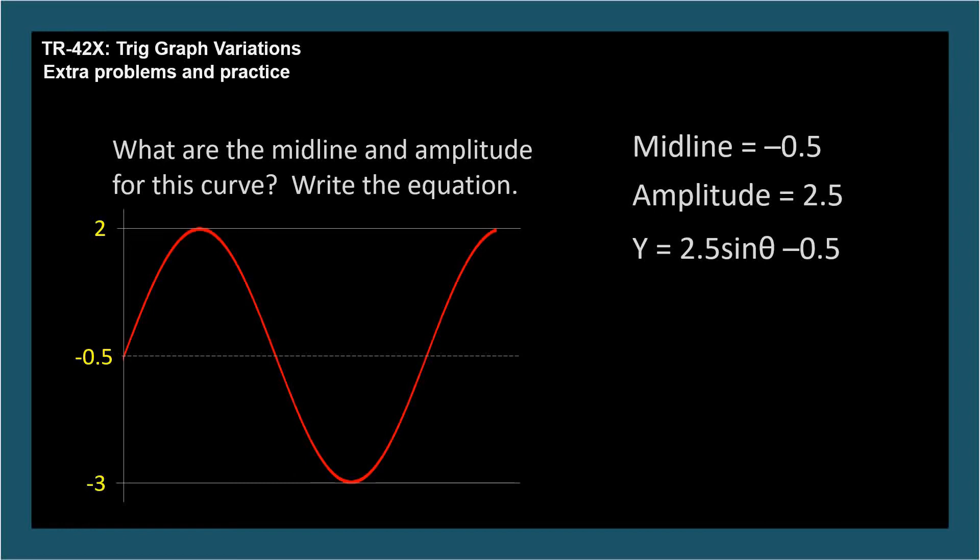Let's change up the vertical axis again. What is the midline, amplitude, and equation of this sine wave that oscillates between 99.5 and 100.5? The midline is 100, and the amplitude is 0.5. So, 0.5 sine theta plus 100.